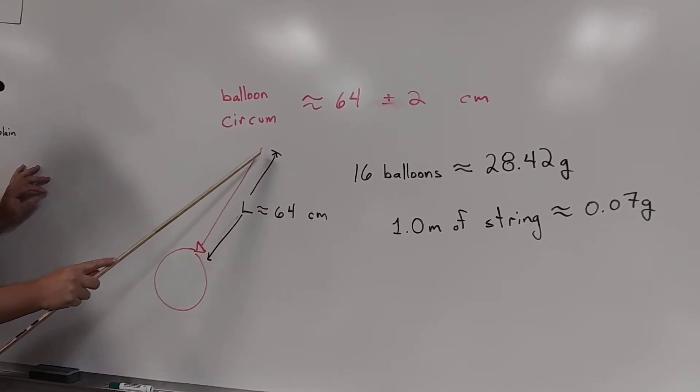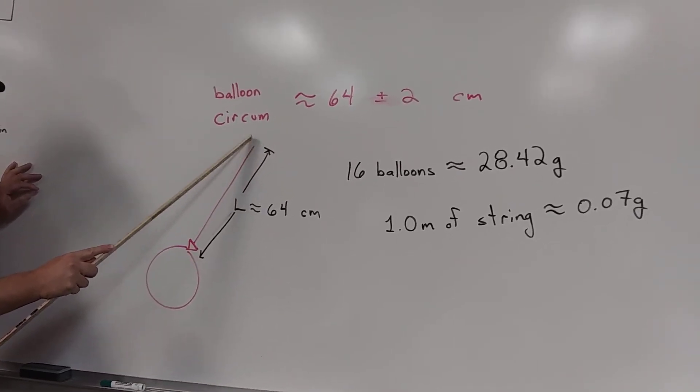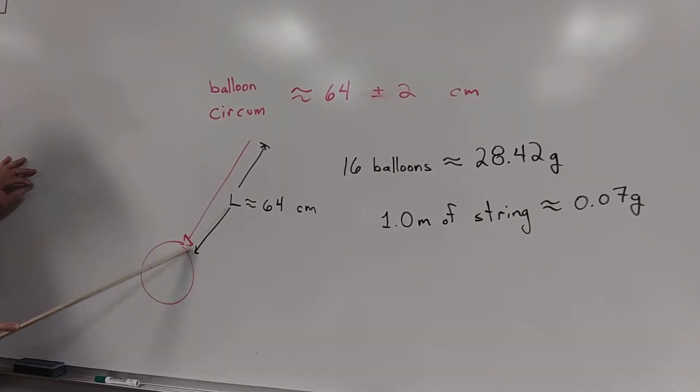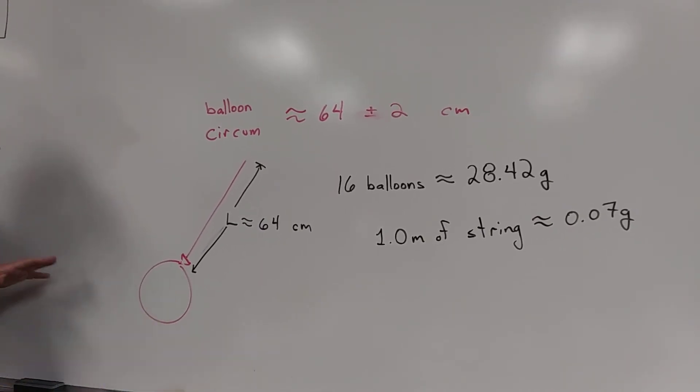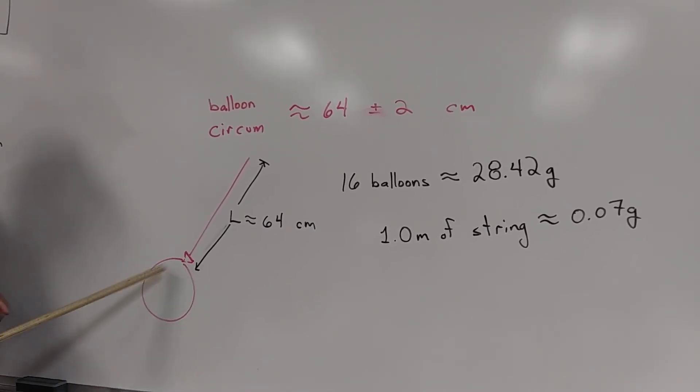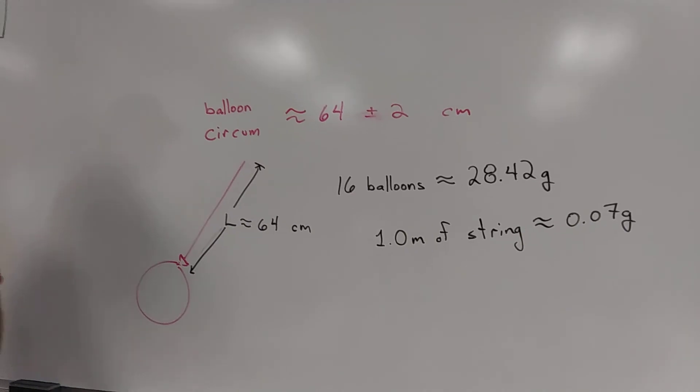And then I did this measurement off camera. You can estimate based off the circumference. You can see if I'm not lying to you, but I'm not. It's about 64 centimeters from the point of connection at the top to right here at the tie. And so you can figure out all this information. And hopefully from this you can figure out the average charge on each balloon. All right. Let's call that good.